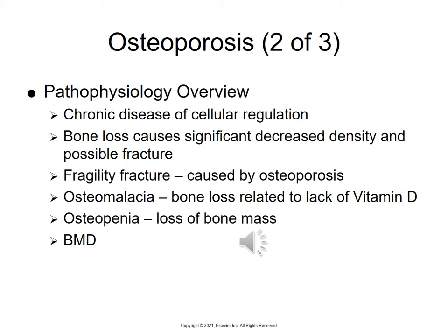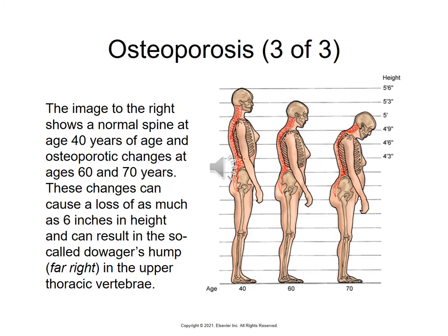Osteoporosis is often known as a silent disease because people do not know they have it until they get a fracture. This picture shows a normal spine at age 40 and then the osteoporotic changes at 60 and 70. This can result in a loss of height up to 6 inches and what is known as a dowager's hump — the curvature of the upper vertebrae seen in that last figure.